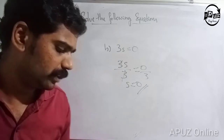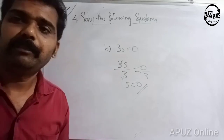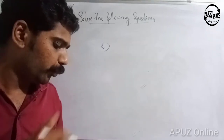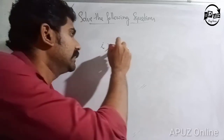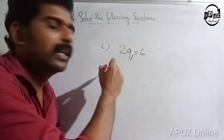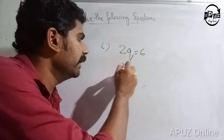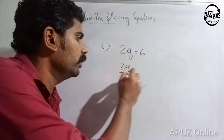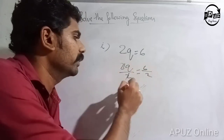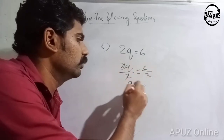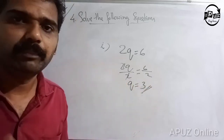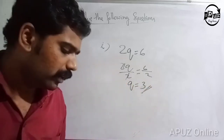Next question: 2q is equal to 6. Divide both sides by 2: 2q divided by 2 is equal to 6 divided by 2. So q is equal to 3.